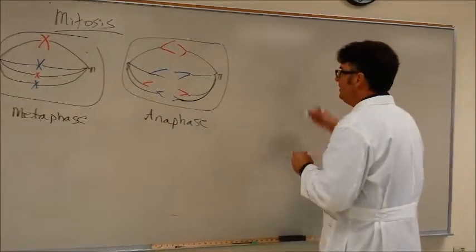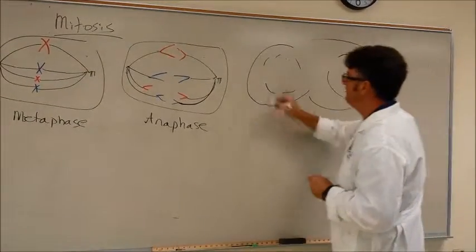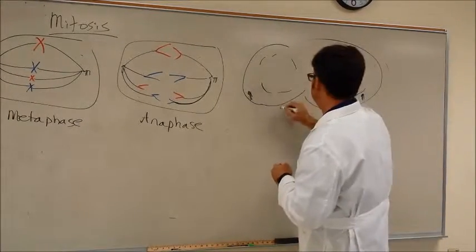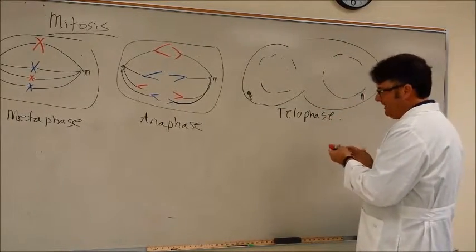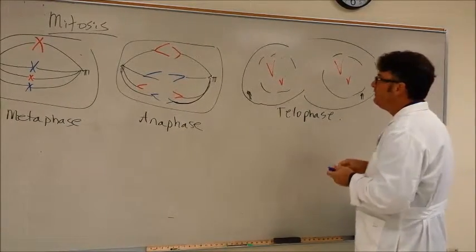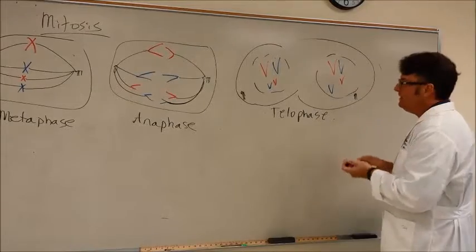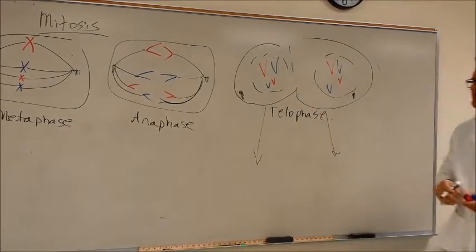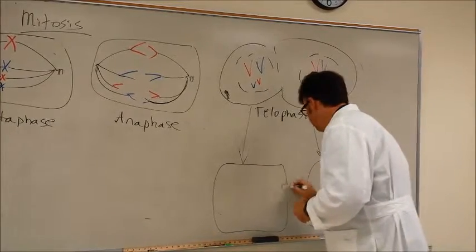And then what happens next is called telophase. And so the nuclei begin reforming. You can see the centrioles on either side. And in this phase, both sides get a big red, a baby red, a big blue and a baby blue. And then these cells will divide via a cleavage furrow in animals. It's called a cell plate if it's in plants. And then in the end, we get two daughter cells.